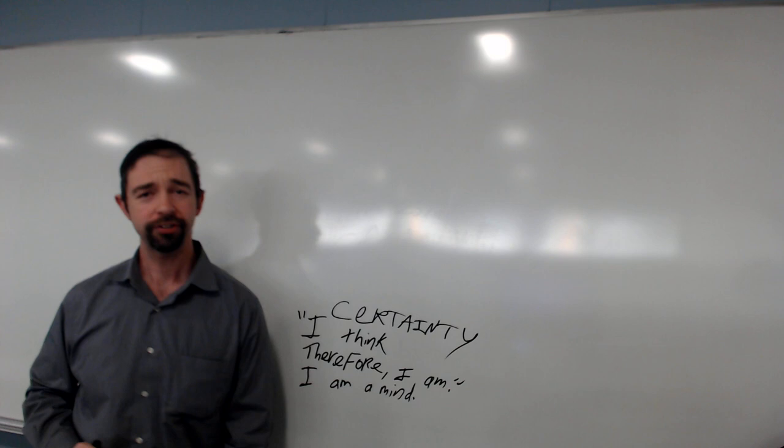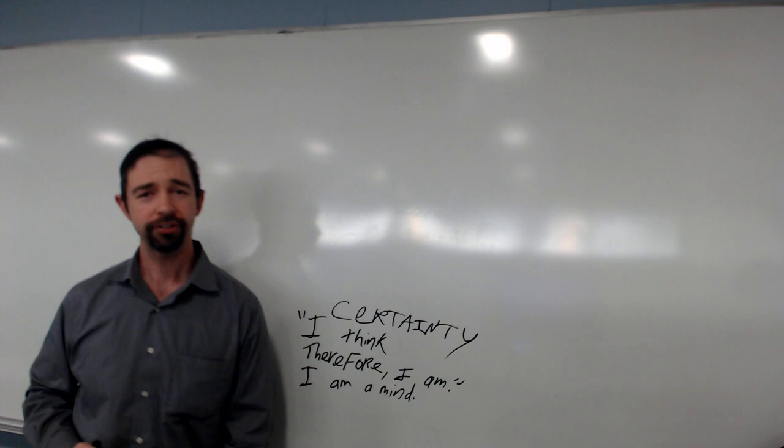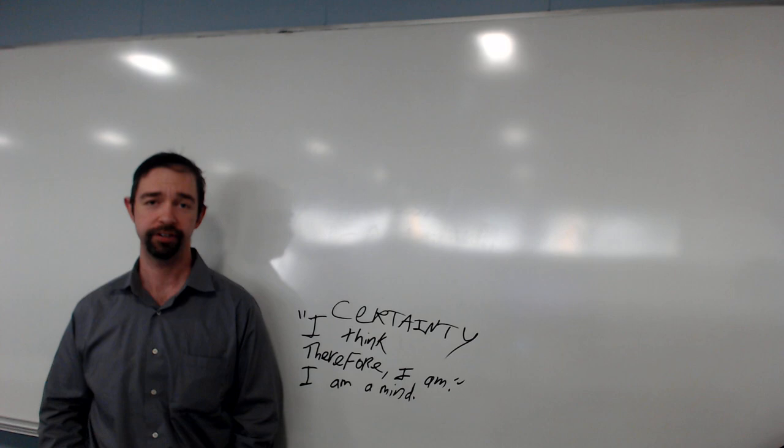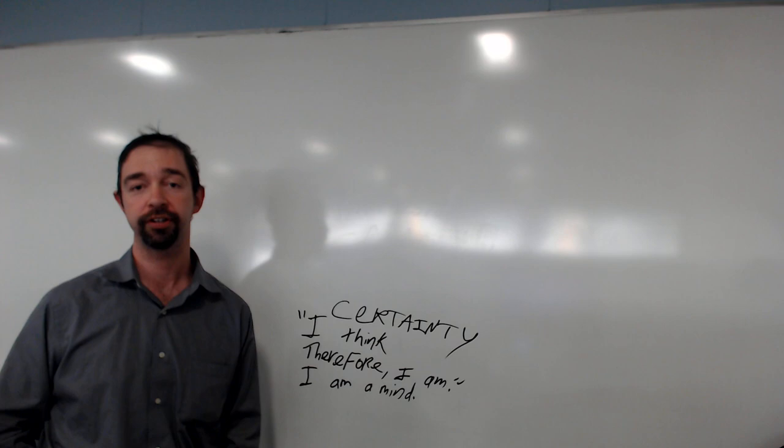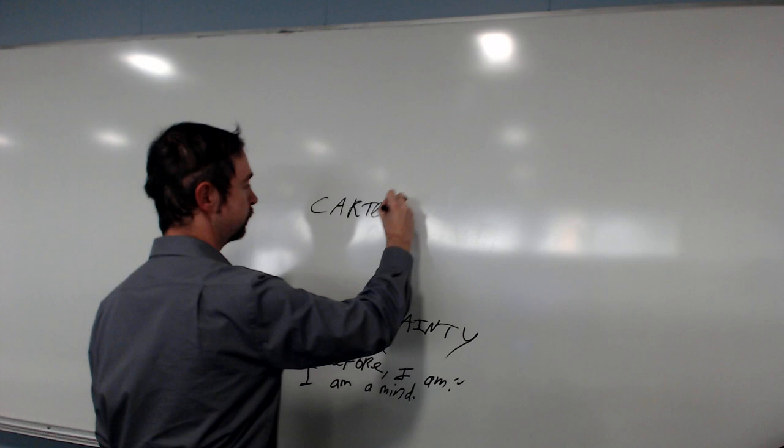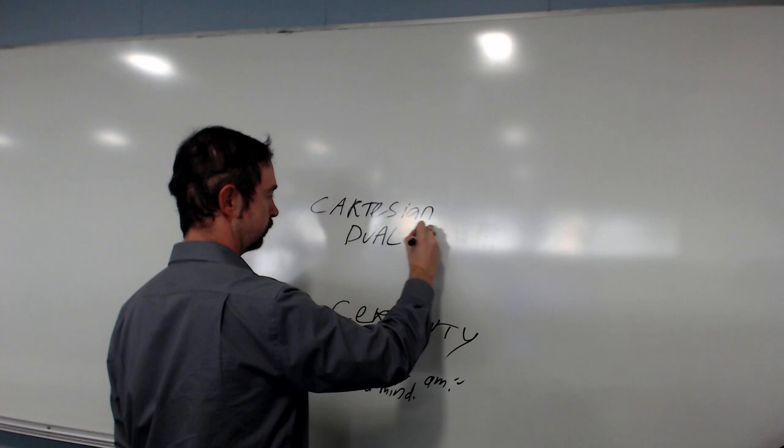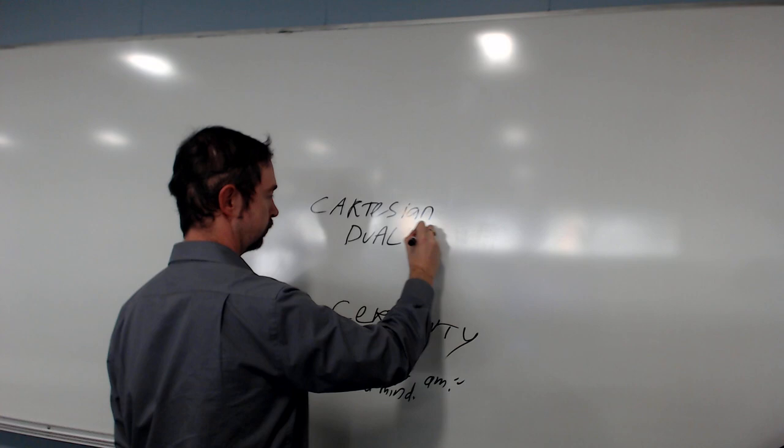So he says, do thoughts have length? How heavy is a thought? What color are my thoughts? Well, those are all inappropriate questions. Minds aren't in space. So Descartes says, there are two fundamental kinds of substances. Two. So we call this Cartesian dualism. Dualism means two. Two-ism. Cartesian dualism. Cartesian two-ism.